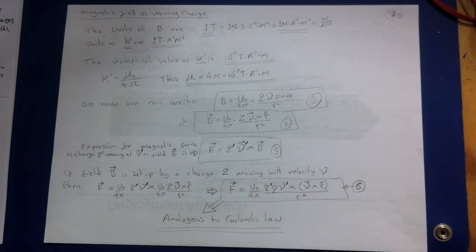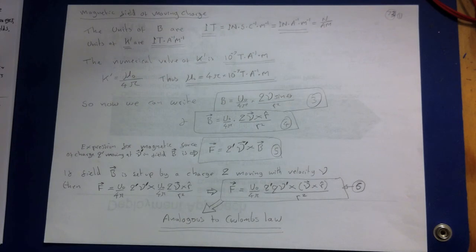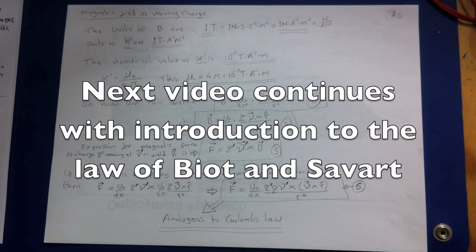For multiple point charges: just as with electric fields, we can take the vector sum of the magnetic fields of the individual charges. The magnetic field obeys the superposition principle — the total magnetic field caused by several moving charges is the vector sum of the fields caused by each individual charge. We can use this to calculate the field caused by a current in a circuit in terms of the fields caused by individual segments of the conductor, which we develop in the next section.